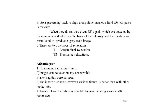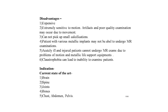There are two methods of relaxation: T1 longitudinal relaxation and T2 transverse relaxation. Advantages of MRI: no ionizing radiation is used; images can be taken in any plane — sagittal, coronal, or axial; inherent contrast between various tissues is better than with other modalities; tissue characterization is possible by manipulating various MR parameters. Disadvantages: it is expensive, extremely sensitive to motion artifacts, and poor quality examinations may occur due to movement.